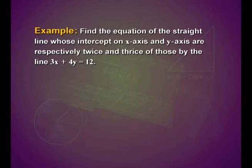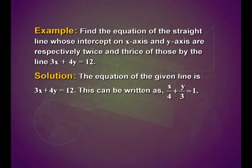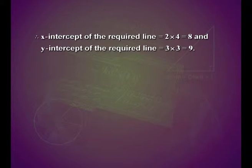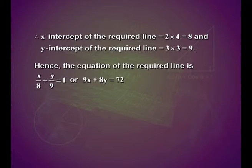Let us look into one more example: find the equation of the straight line whose intercepts on the x axis and y axis are respectively twice those on the line 3x plus 4y equals 12. The equation 3x plus 4y equals 12 can be written as x upon 4 plus y upon 3 equals 1, giving intercepts 4 and 3 on the x and y axes respectively. Therefore, the x intercept of the required line is 2 times 4 equals 8, and the y intercept is 2 times 3 equals 6. Wait — actually, the y intercept of the required line is 3 times 3 equals 9. Hence the equation is x upon 8 plus y upon 9 equals 1, or 9x plus 8y equals 72.